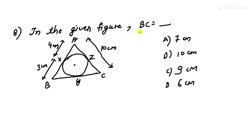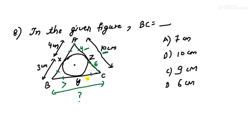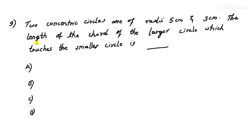Question 8: in the given figure, find the length of BC. From A, tangents AX and AZ are equal — if AX is 4, then AZ is 4. From B, tangents BX and BY are equal — if BX is 3, then BY is 3. AC is given as 10, and AZ is 4, so CZ = 10 minus 4 = 6, meaning CY = 6 as well. Therefore BC = BY + CY = 3 + 6 = 9. Option C is correct.